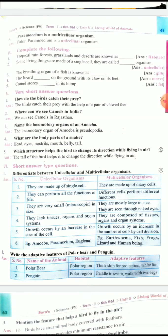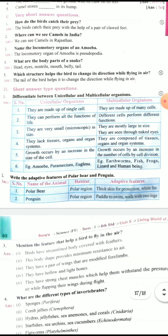Next very short answer questions. First one: How do the birds catch the prey? The birds catch the prey with the help of pair of clawed feet. Second one: Where can we see camels in India? We can see camels in Rajasthan. Third one: Name the locomotory organs of amoeba. The locomotory organ of amoeba is pseudopodia. Fourth question: What are the body parts of a snake? Head, eyes, nostrils, mouth, belly, tail. Fifth one: Which structure helps the bird to change its direction while flying in air? The answer is tail of the bird helps it to change the direction while flying in air. Very easy questions.